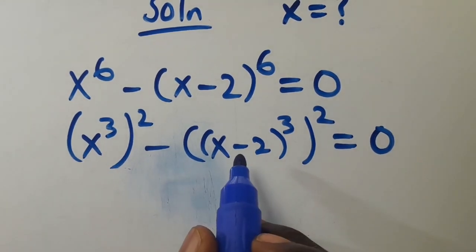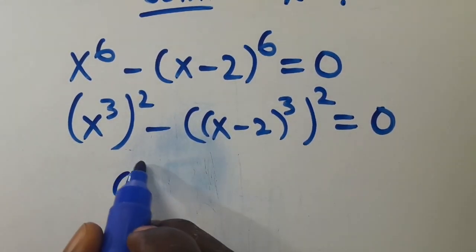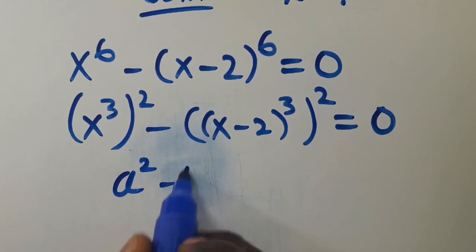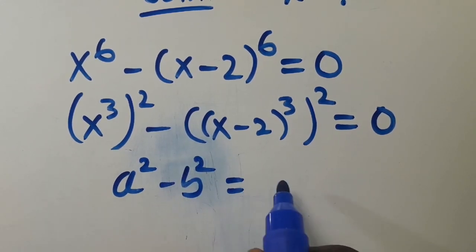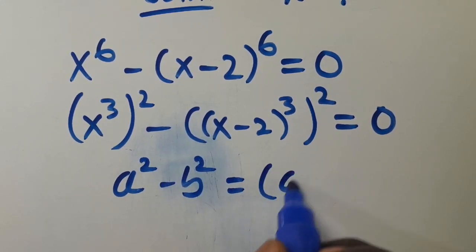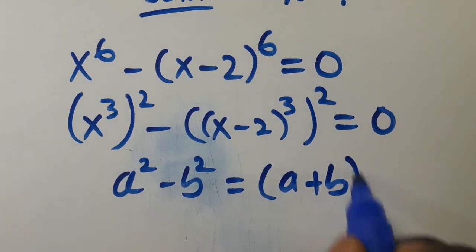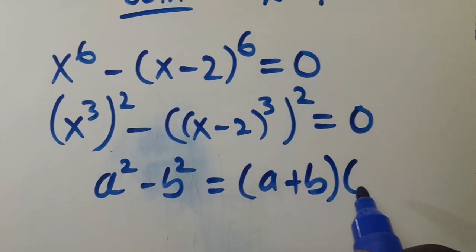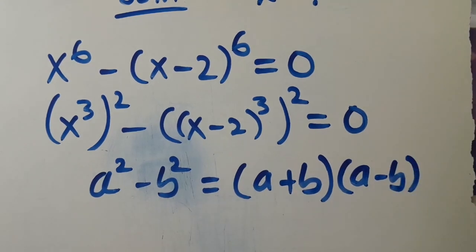This is the difference of two squares. When you have a to the power of 2 minus b to the power of 2, this equals a plus b multiplied by a minus b.